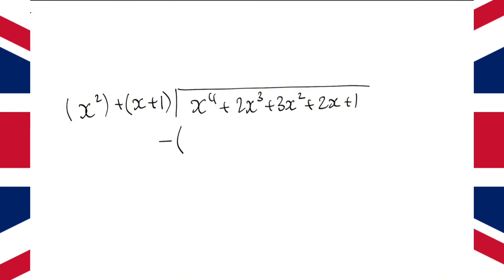So, we're going to be subtracting x to the power 4, and we have to think, what do we times x squared by to get x to the power 4? Well, we just times by x squared. And then, timesing x squared by x plus 1, we get x cubed plus x squared. And then, doing the subtraction, we're going to get x cubed, and then 3x squared minus x squared, so plus 2x squared. And then, we can bring the 2x plus 1 down.